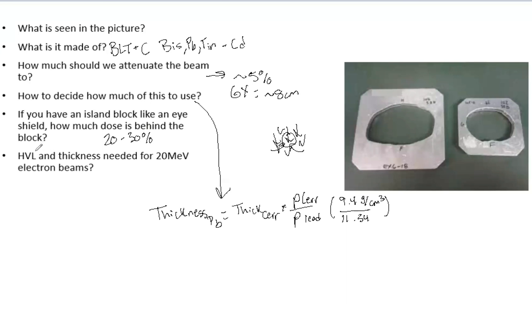So now what is the half value layer and the thickness needed for a 20 MeV electron beam. So HVL here is 13 millimeters for 20 MeV, meaning that if you want to get this to about 5% or a good clinical level, you're going to want somewhere around one cm thick.